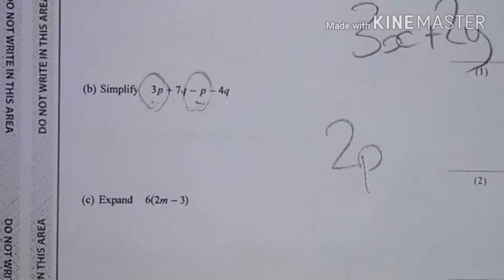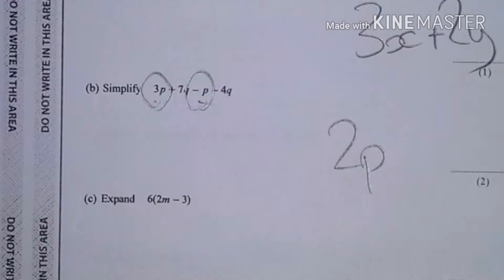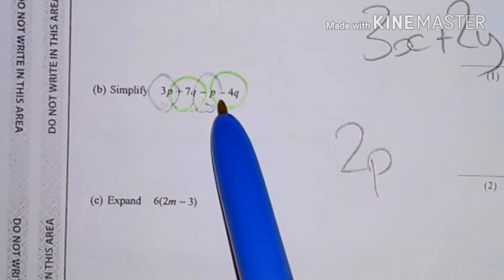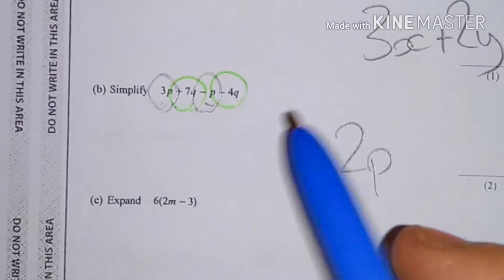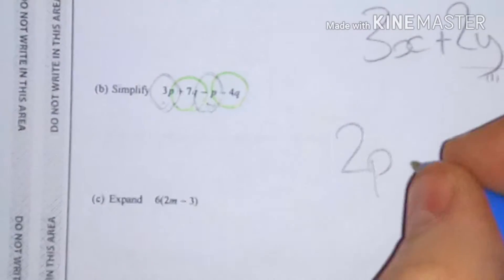And then I'm going to get a pen, a different colour pen, and I'm going to circle my q's and make sure that I'm doing the sign in front of the q's as well. So my 7q minus 4q, which is 4, 5, 6, 7, which is 3q.